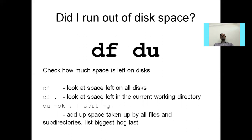The df and du commands: if you want to know about disk space and how much space is left on disk, the df command is useful. df looks at the space left on all disks. df followed by a dot looks at the space in the current working directory. If you want to know how much space is taken by all files and directories, use du -sk . | sort -g — it will sort according to all files and directory sizes.